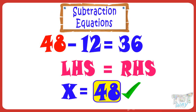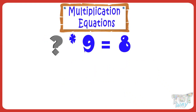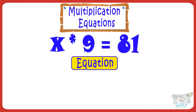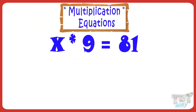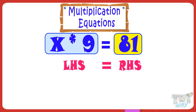Now let's take another equation. If we multiply 9 by a number, it gives 81. What is the number? We can write this mathematical question in the form of an equation: X multiplied by 9 equals 81. That is, any number multiplied by 9 gives 81, and we have to find the number. Here, X multiplied by 9 is LHS and 81 is RHS. Now we have to find out the value of X.